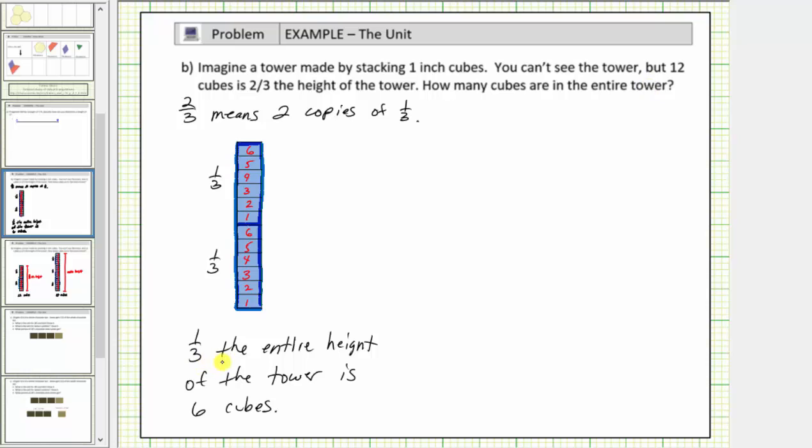And now from here, because one-third of the entire height of the tower is six cubes, six times three, or eighteen cubes, would be the number of cubes in the entire tower.